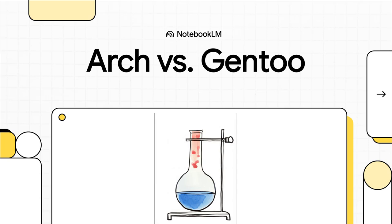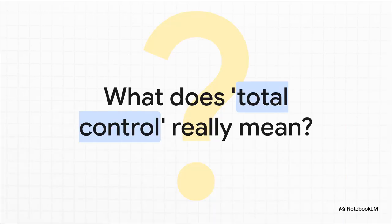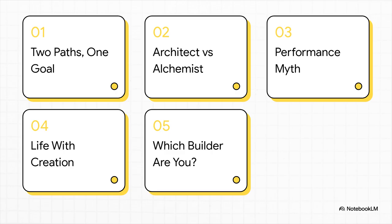In today's video, we'll go over Arch Linux vs. Gentoo. We're talking about two legendary Linux distributions, and they're both famous for giving users ultimate control. But what does that actually mean in practice? It's all about building an operating system that is, from the ground up, uniquely and fundamentally yours. Here's what we're going to cover: we'll see how both distros have the same goal but take totally different paths to get there. Then we'll dig into our core metaphor — the architect vs. the alchemist. We're also going to bust a pretty common myth about performance, talk about what it's like to live with a system you've built, and then at the end, we'll help you figure out which builder you are.